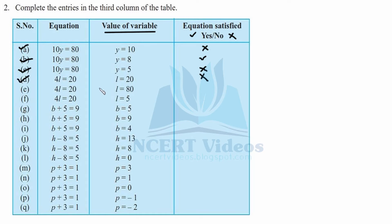For part e, the same equation with l equal to 80: 80 into 4 is 320. We cross it. For part f, l equal to 5: 4 fives are 20, which matches the equation. Therefore 5 satisfies this equation. As seen in these three examples, only one value will satisfy — in this case, l equal to 5.